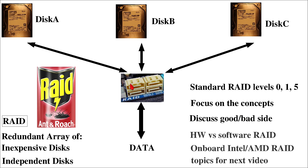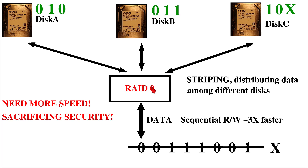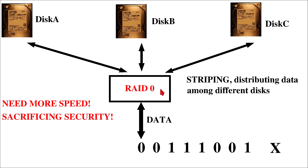In today's video we will focus on the logic behind RAID level 0. The number here is mostly representative of the timeline of how these different RAID levels have been introduced. Everyone always wanted more and more speed, and this is why RAID level 0 was one of the very first RAID levels ever implemented and used.